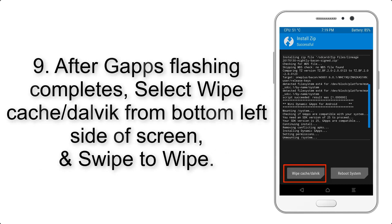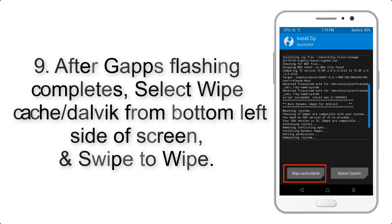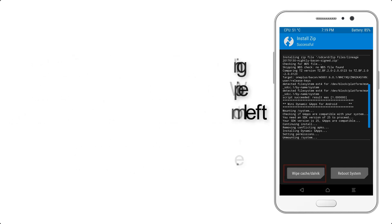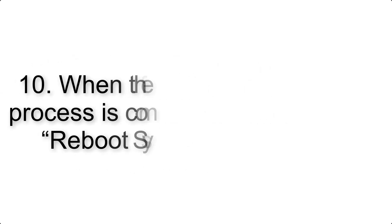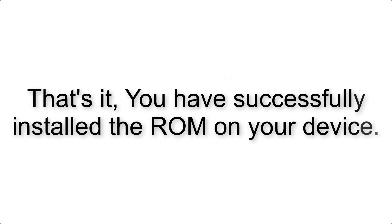After gapps flashing completes, select Wipe Cache and Dalvik from the bottom left side of the screen and swipe to wipe. Step 10: When the flashing process is complete, hit Reboot System. That's it — you have successfully installed the ROM on your device.